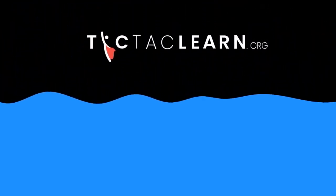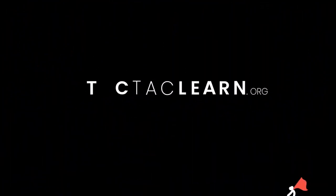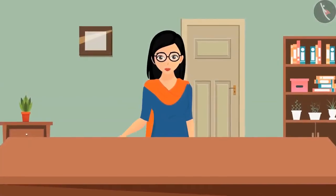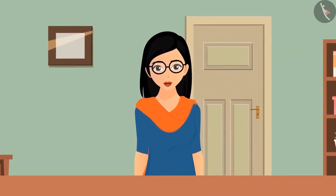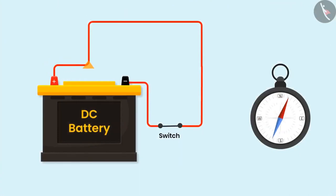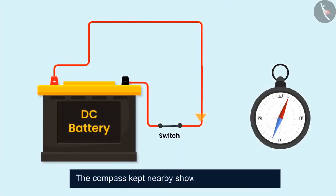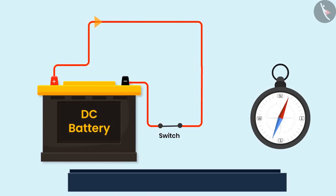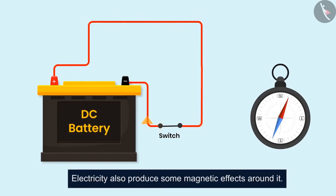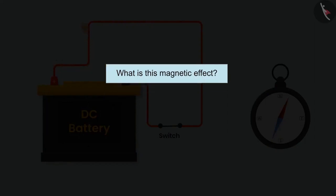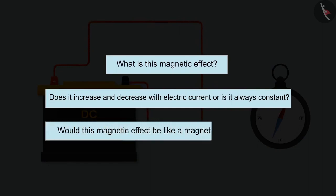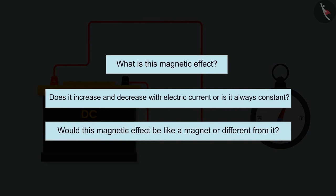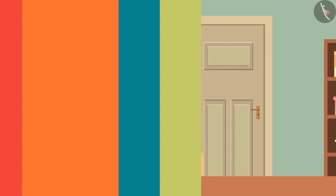Today's video starts with a story that changed the definition of science. When electric current was flowing through a metal wire, a compass kept nearby showed a deflection. This led to the realization that electricity also produces a magnetic effect. Does this magnetic effect increase and decrease with electric current, or is it always constant? Is this magnetic effect like a magnet or different from it? These questions will be explored in today's video.